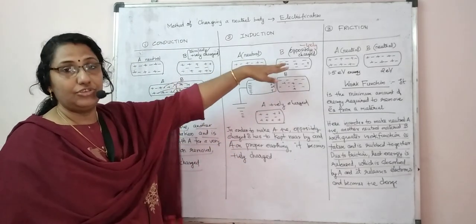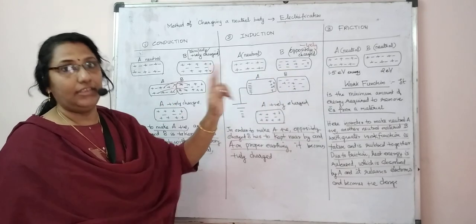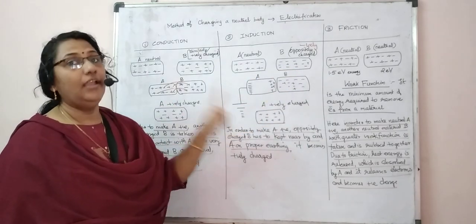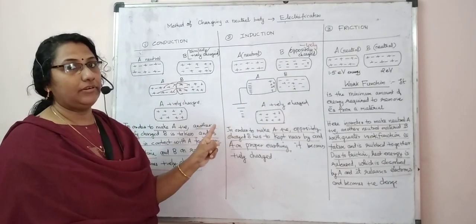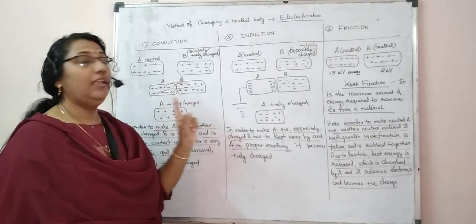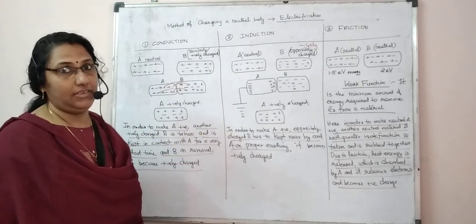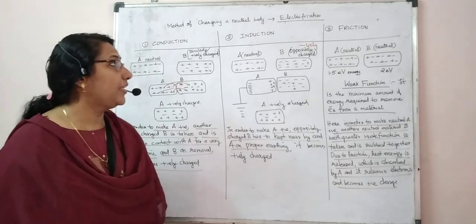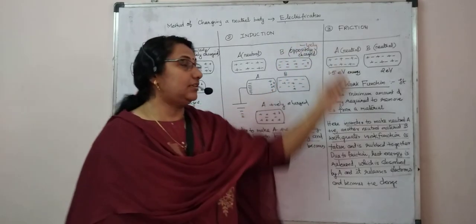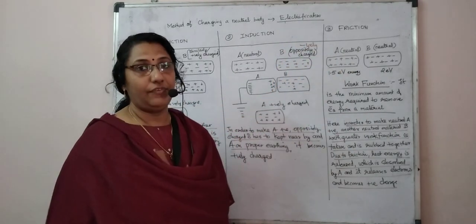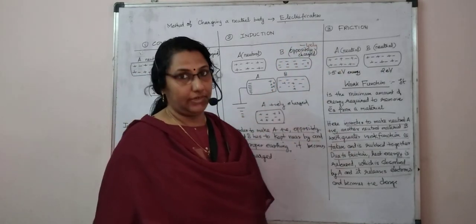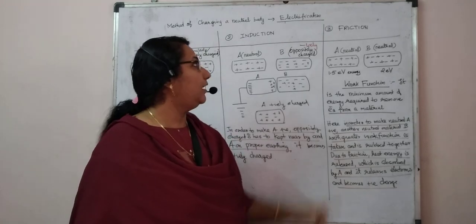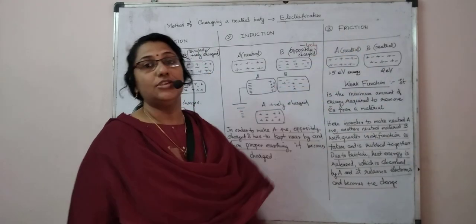If you want to make A negative, take positively charged B, keep it nearby, and on proper earthing of A, it becomes negatively charged. The third method for electrification is by friction.